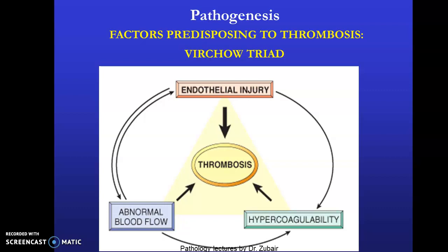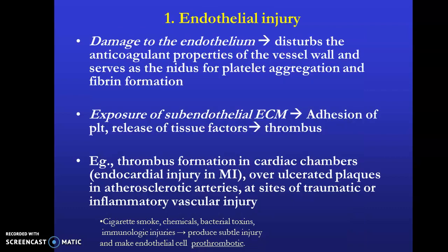This brings us to Virchow's triad, which is a common short-answer topic in university exams. Virchow's triad comprises three factors predisposing to thrombosis: first, endothelial injury; second, hypercoagulability; and third, abnormal blood flow. Let's look at each in detail. Endothelial injury: damage to the endothelium disturbs the anticoagulant properties of the vessel wall and serves as a nidus for platelet aggregation and fibrin formation.